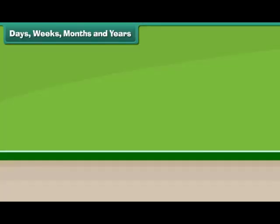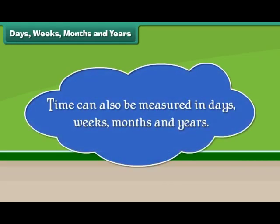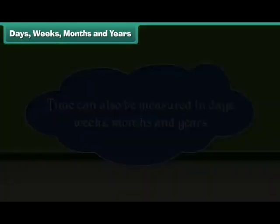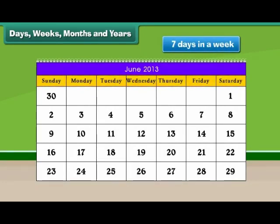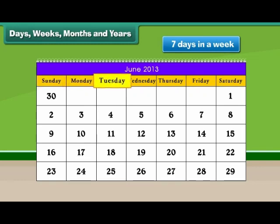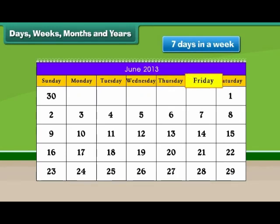Time can also be measured in days, weeks, months, and years. There are 7 days in a week. They are Sunday, Monday, Tuesday, Wednesday, Thursday, Friday, and Saturday.